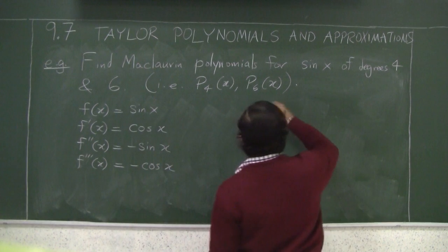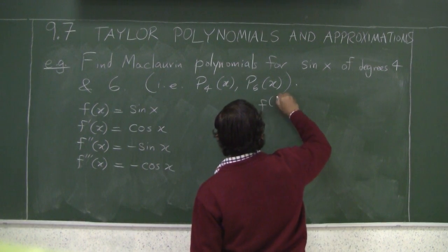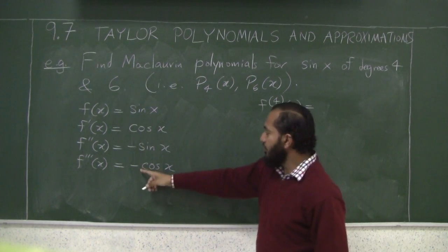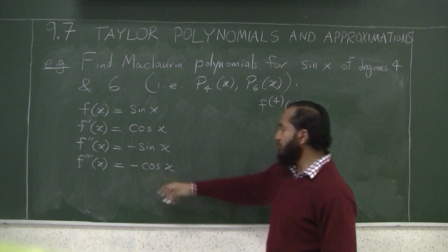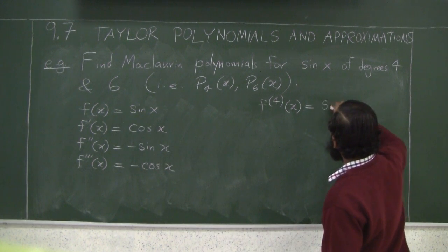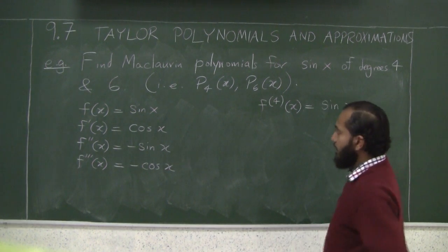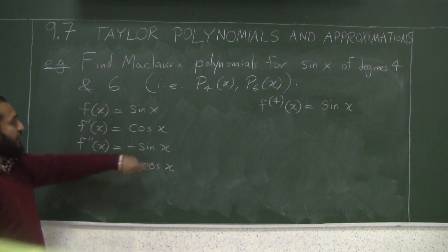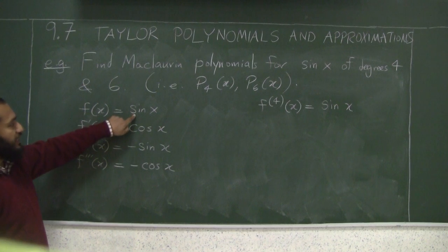Let's continue here. The fourth derivative of x is how much? The derivative of negative cosine x is positive sine, right? And you know this from before - the trigonometric functions sine and cosine have cyclical derivatives.